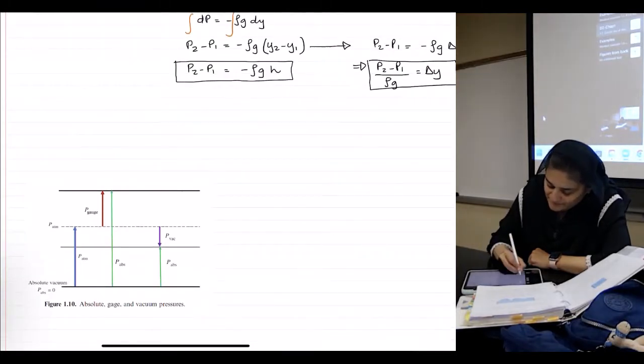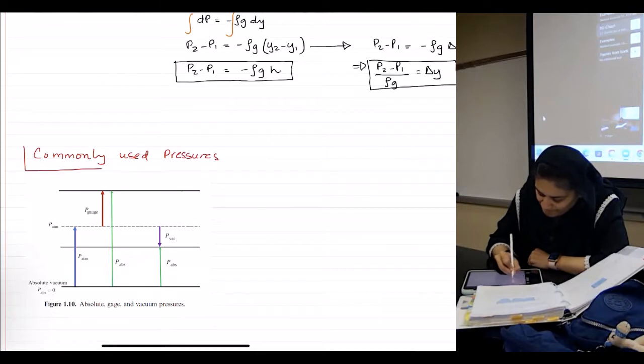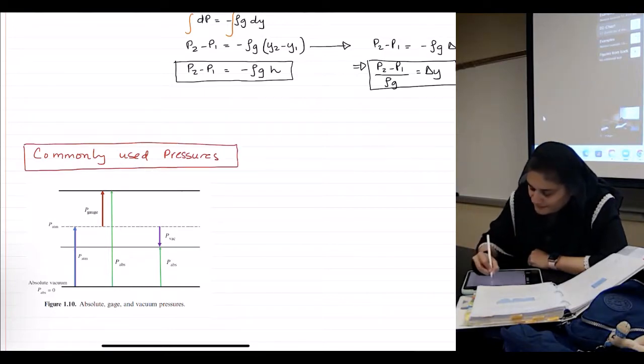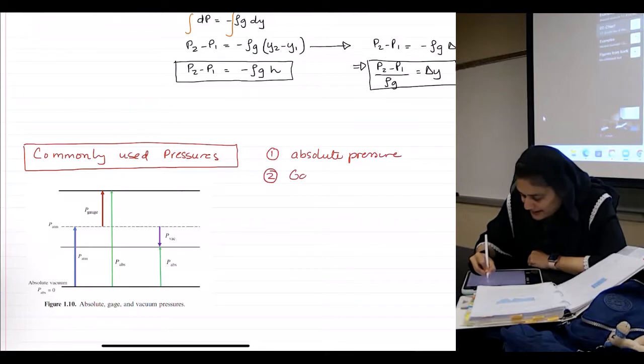So, commonly used pressures. Number one, absolute pressure. Number two, gauge pressure. And number three, vacuum pressure.